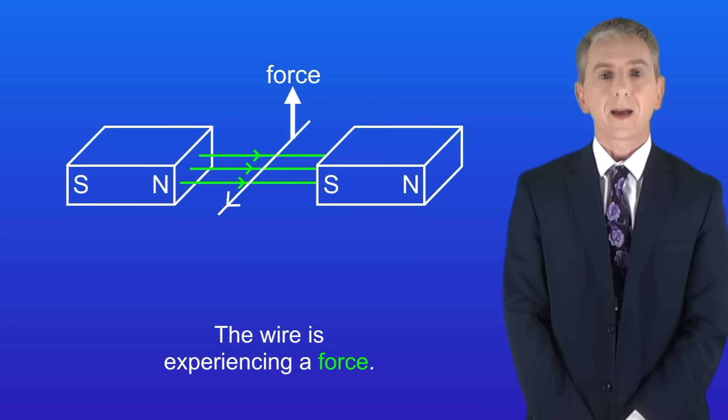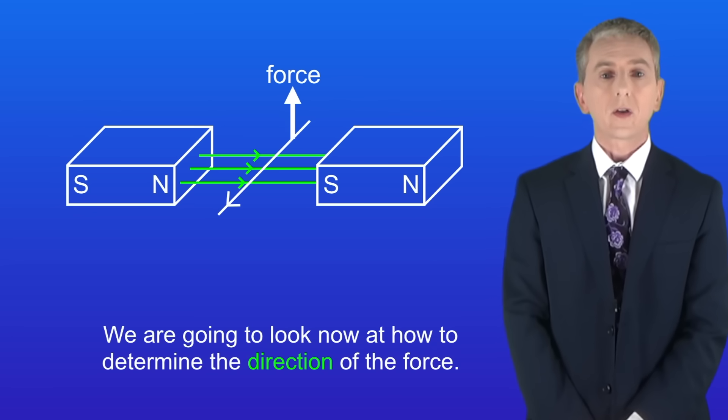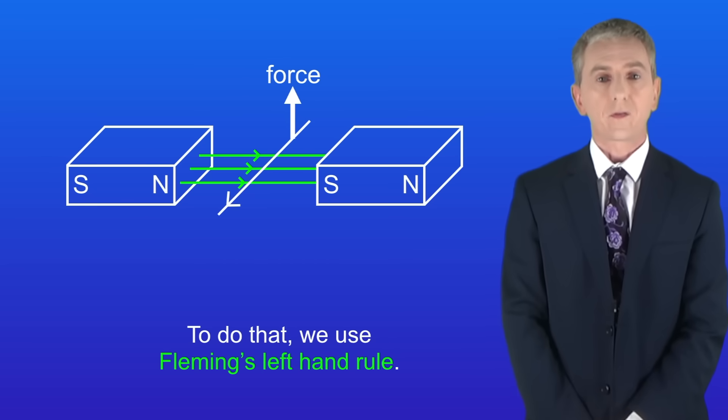Okay, going back to our diagram, as we saw the wire is experiencing a force. We're going to look now at how to determine the direction of the force. To do that we use Fleming's left hand rule. Here's how we do it.